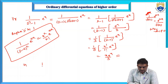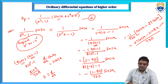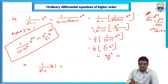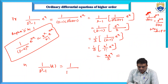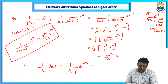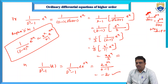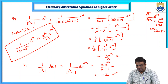The last part: (1/(D³-1)) of 2. Treat 2 as 2·e^(0x). Replace D by 0: 2·e^(0x)/(0³-1) = 2/(0-1) = -2. So -2 is the third part of the particular integral.